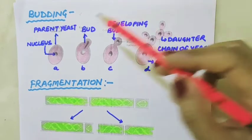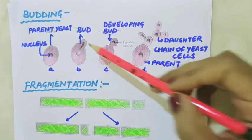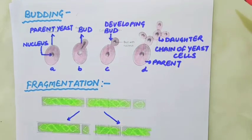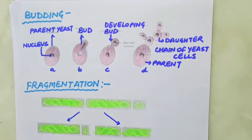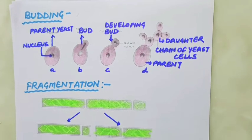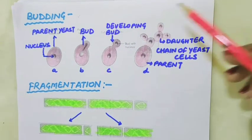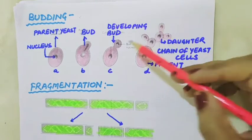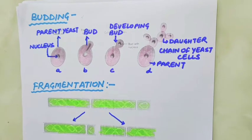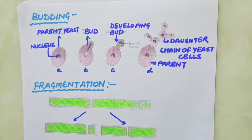The next method of asexual reproduction is budding. In this process, a daughter individual is formed from a small projection on the parent body called a bud. Most fungi like yeast reproduce by budding. Yeast grow and multiply every few hours given sufficient nutrients and favorable conditions. A small bulb-like projection called a bud is produced from the yeast, gradually grows, and then detaches from the parent. The new cell then grows and produces more cells. Sometimes a chain of buds forms, leading to the production of large numbers of yeast.